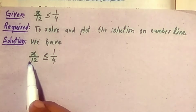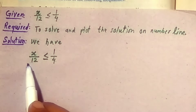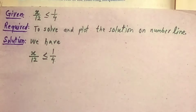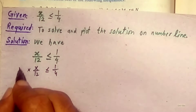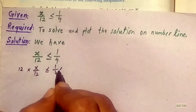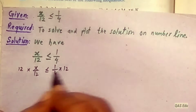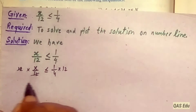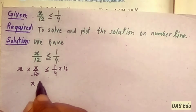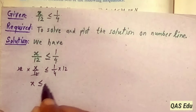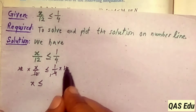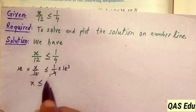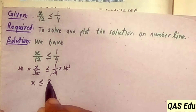We will multiply both sides by 12. Canceling, x is less than or equal to 4 over 4, which equals 3. So x is equal to 3.